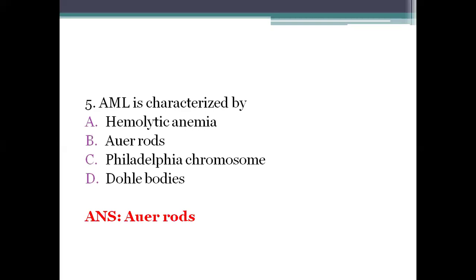Looking at other options: hemolytic anemia is where RBCs are destroyed faster than they can be produced. It may be inherited — passed through genes from parents — or acquired later due to infections (viral or bacterial), medications such as penicillins or anti-malarial drugs, blood cancers, autoimmune disorders like systemic lupus erythematosus and rheumatoid arthritis, or certain tumors.